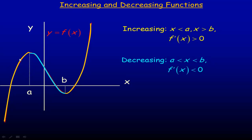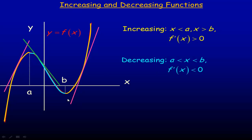Now if we were to draw a tangent line over here, notice that any tangent line drawn on that increasing part of the graph would be sloping upward, so any derivative over here would be greater than zero. The same thing applies to the right of b — the derivative is also positive there. Remember the derivative is the same as the rate of change or the slope of a tangent at any point. If we draw any tangent between a and b, notice it's sloping down, so the derivative would be negative there. A negative derivative means a function is decreasing; a positive derivative means it's increasing.